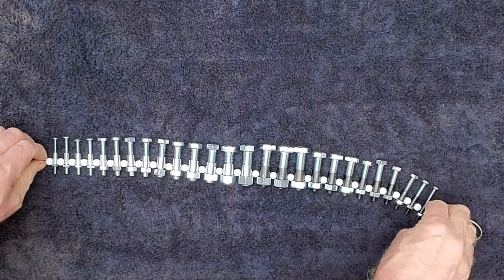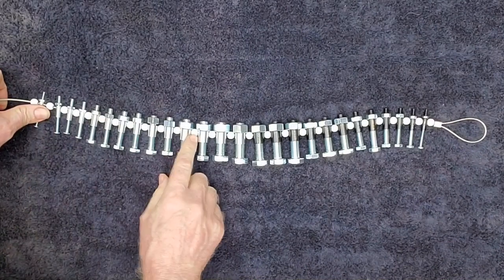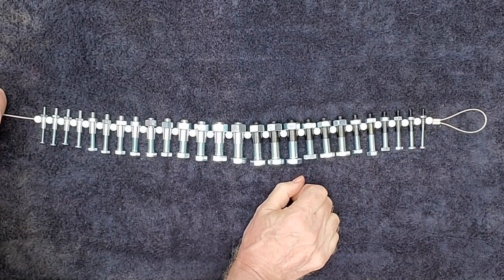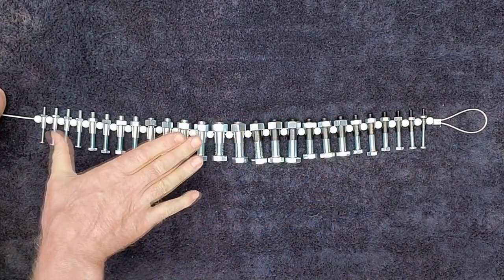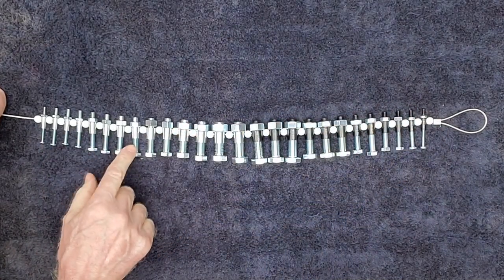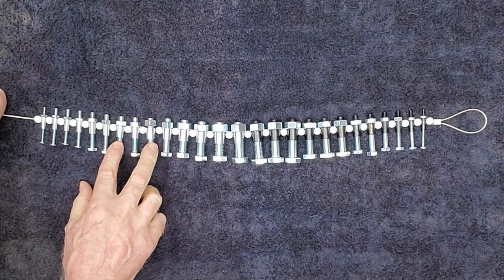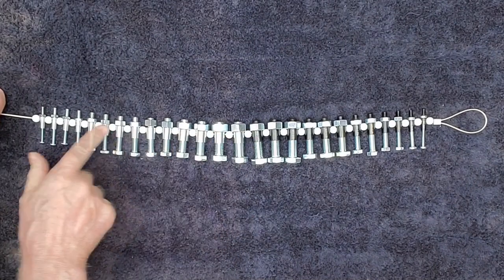All right, here we go. So now we have a complete tool: metric, both fine thread and coarse. These are the fine threads, you could probably see it's more fine than the coarse. Fine, coarse, fine, coarse for the Imperial.